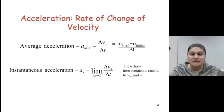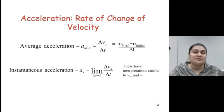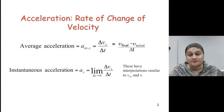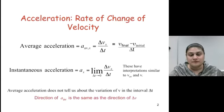Instantaneous acceleration is an acceleration at any instant, and this is given by delta V over delta T in the limit when delta T becomes very, very small. Average acceleration does not tell us about the variation of V in the interval delta T. The direction of A average is the same as that of the velocity vectors that it belongs to.